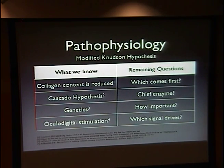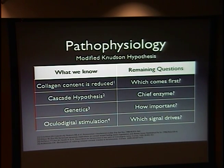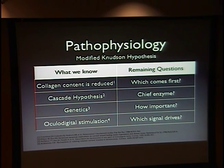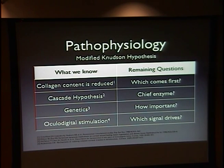Pathophysiology is an interesting discussion — the literature is full of arguments. One thing is for sure: collagen content is reduced. The cascade hypothesis states that keratocytes, which are the cells found in the corneal stroma, for whatever reason cannot react well to oxidative stress. There are certain enzyme inhibitors that are significant in the reaction to oxide radicals formed by light that hits our cornea. In patients with keratoconus, these enzyme inhibitors tend to be deficient, and that leads to a cascade of effects, namely corneal thinning.